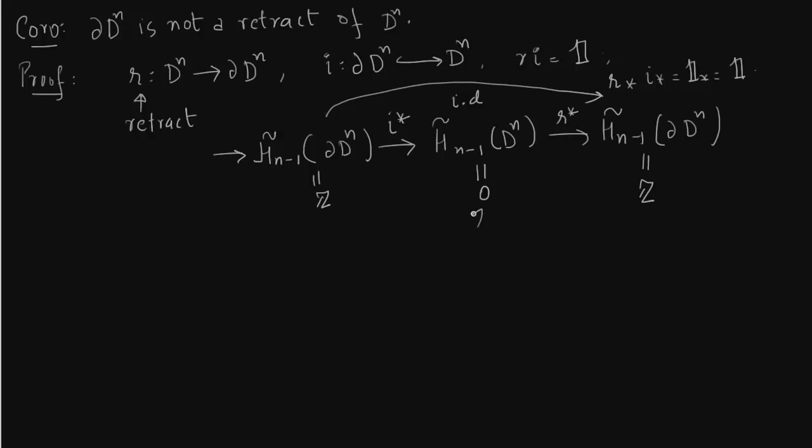But the zero in between causes the contradiction, and because of this contradiction we cannot have the retractor.